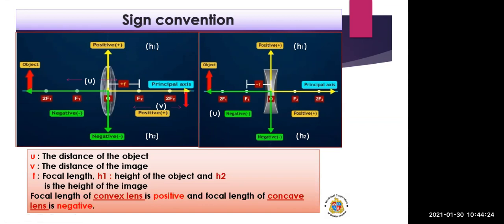The focal length of a convex lens is always positive and the focal length of a concave lens is negative. U is the distance between the lens and the object. V is the distance between the lens and the image. Focal length is the distance between the optical center and the principal focus.